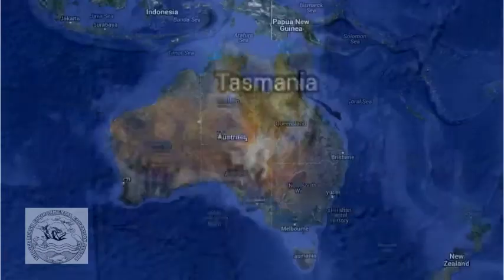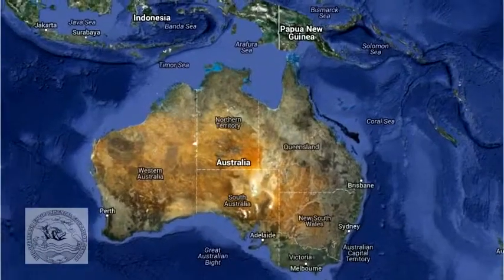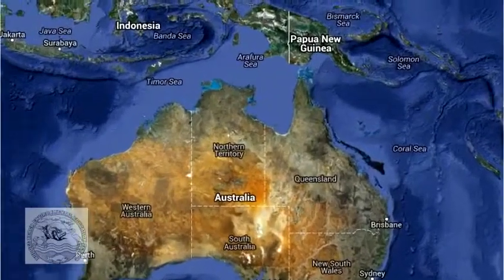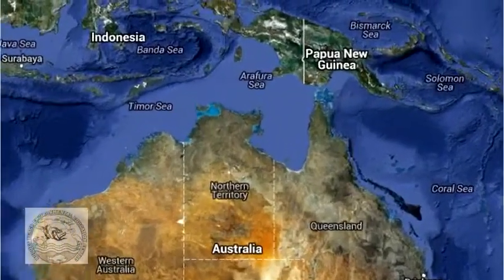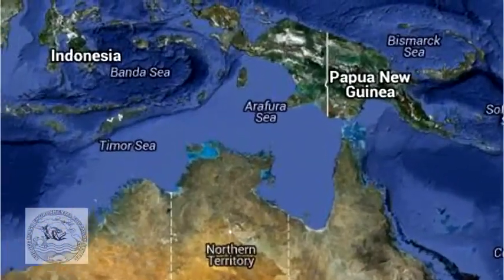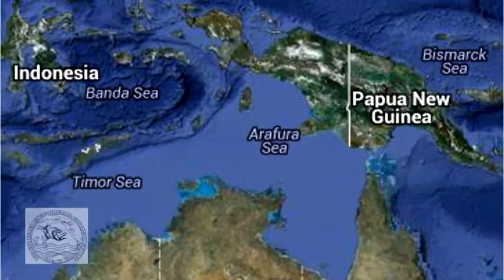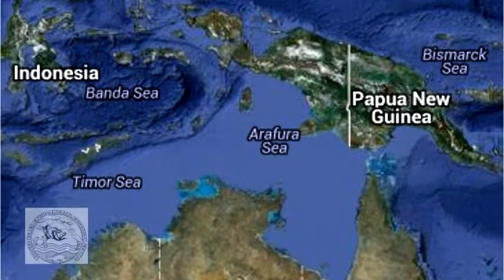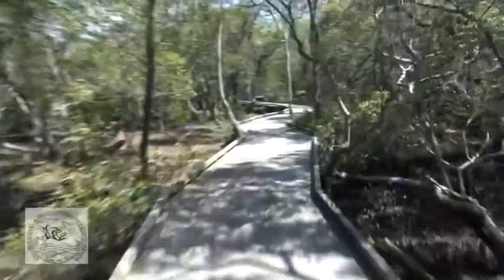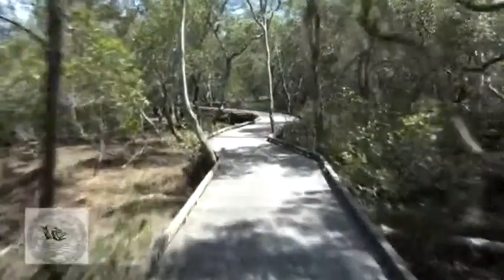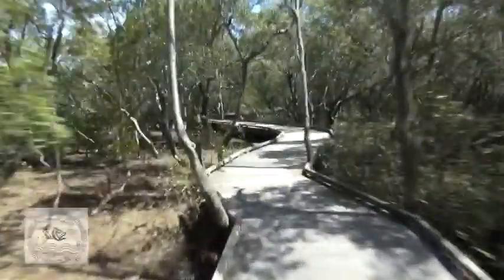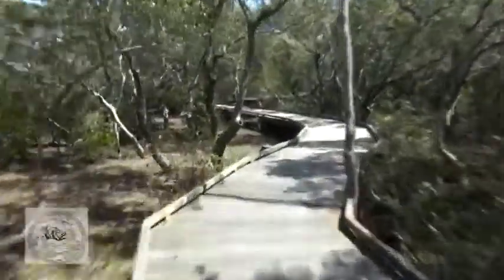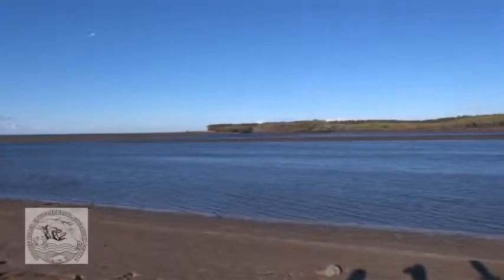This is because mangroves thrive in the tropics of Australia and Asia where there are high temperatures, high rainfall and high humidity. Mangroves grow in estuarine environments. They are not found on the open beaches as there is too much wave and surf action.